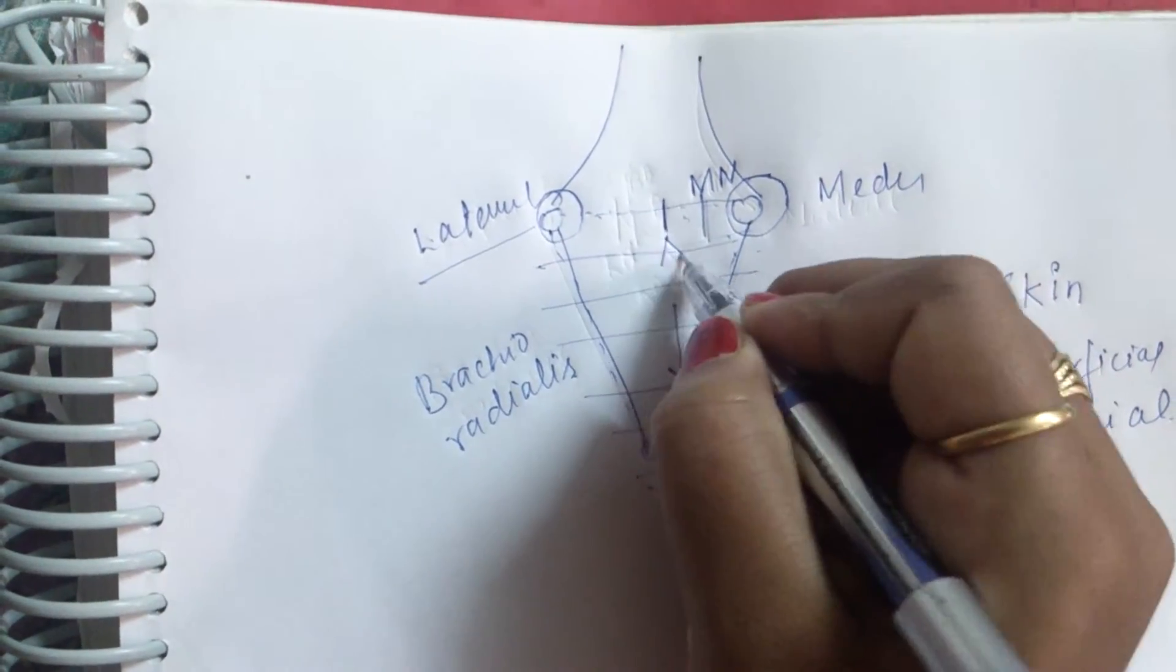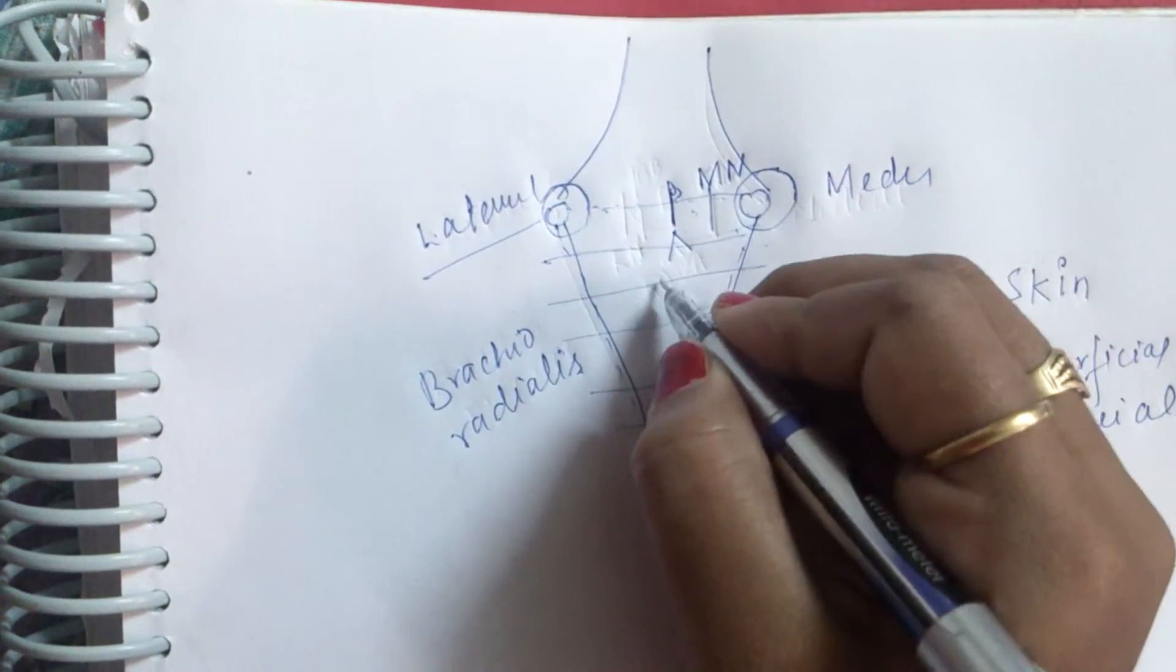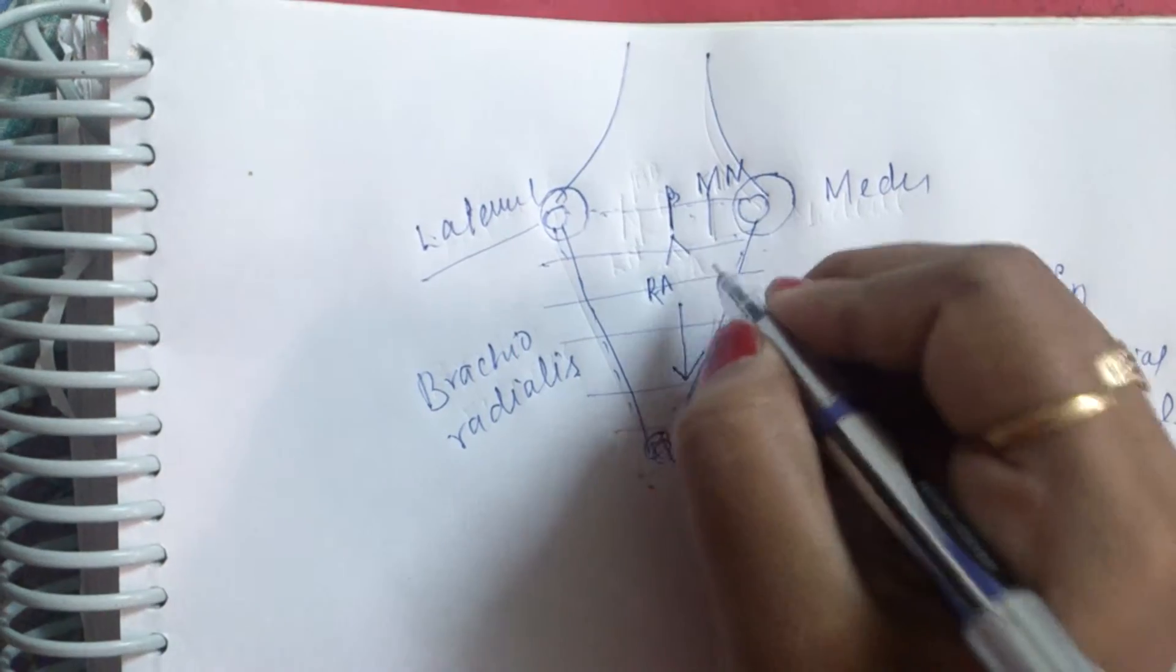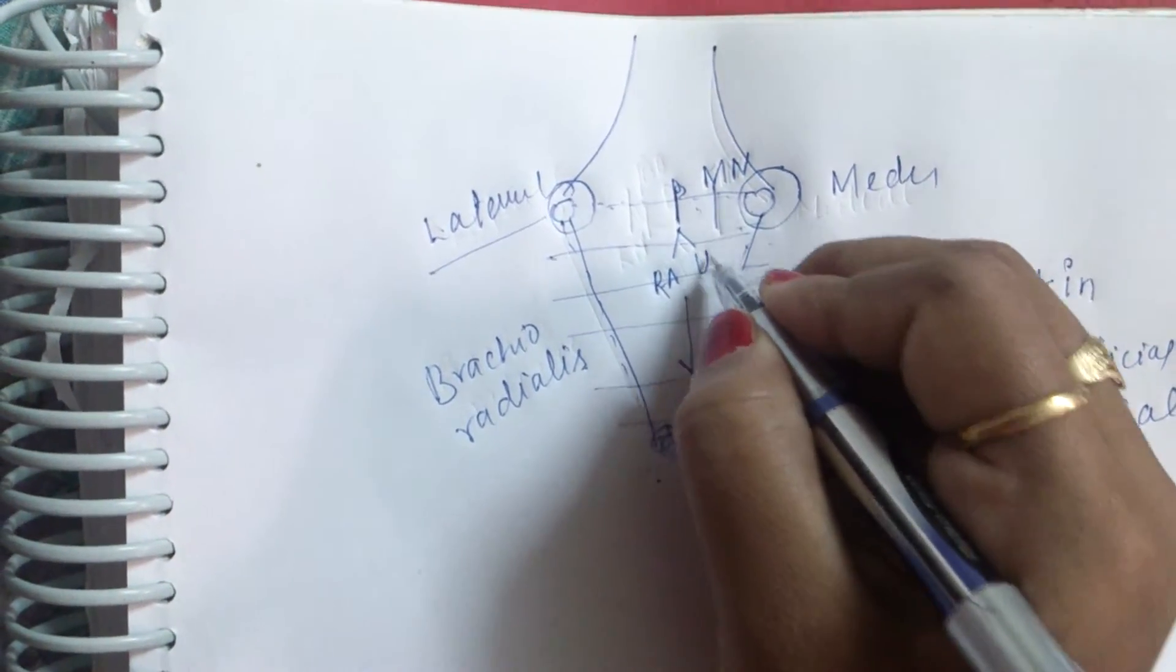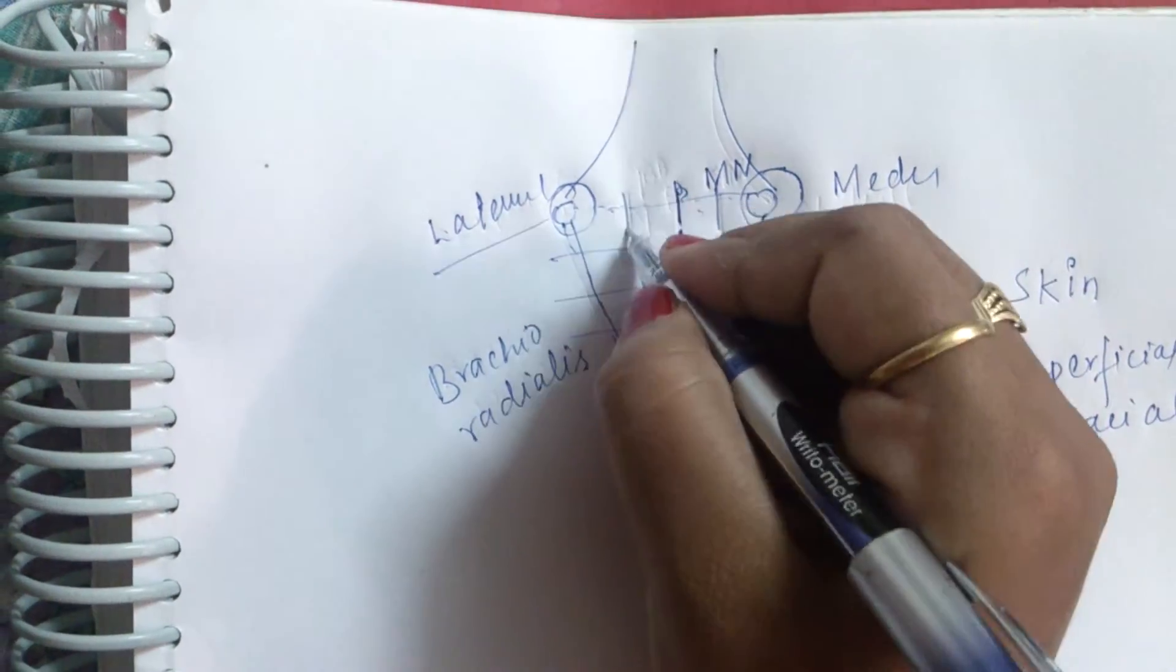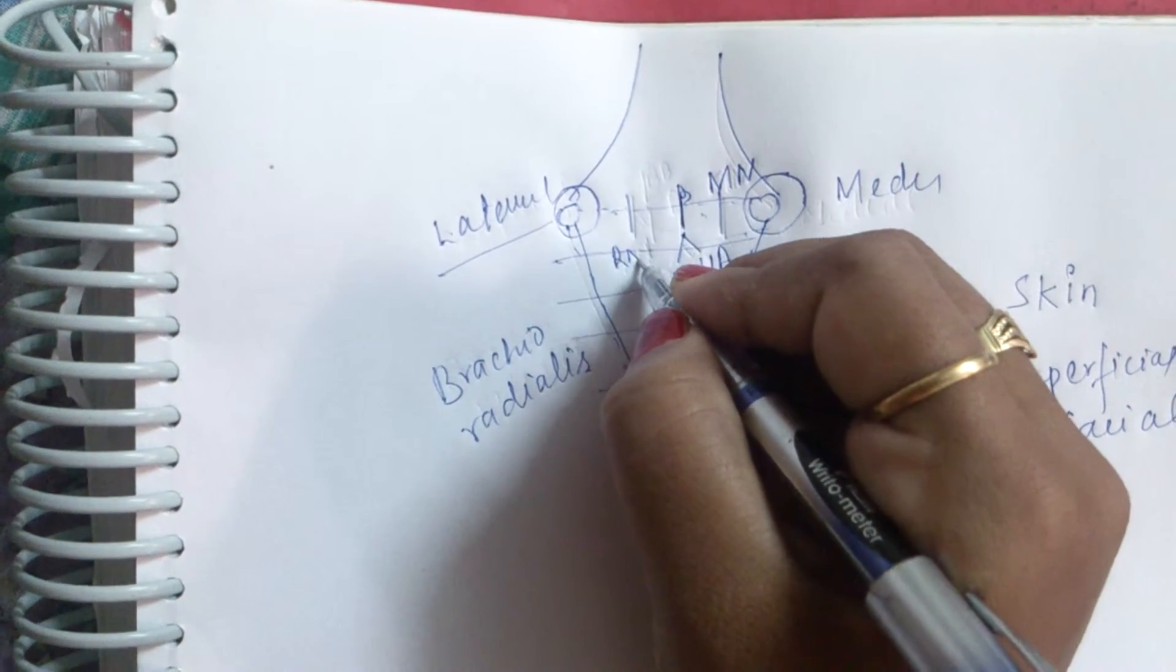This is the brachial artery which divided into radial artery and ulnar artery. And this is the radial nerve.